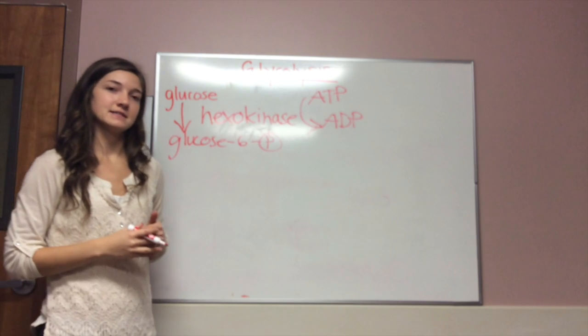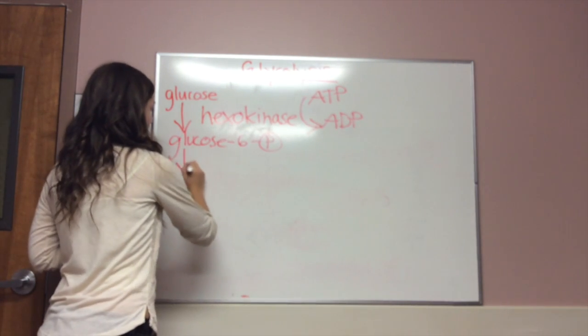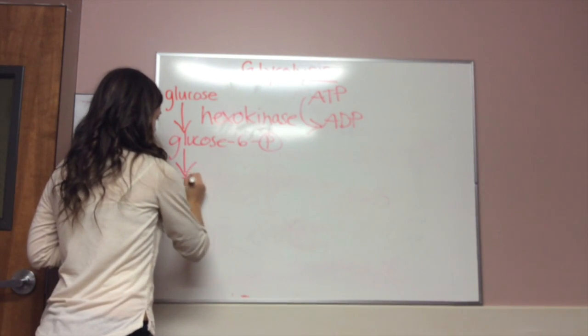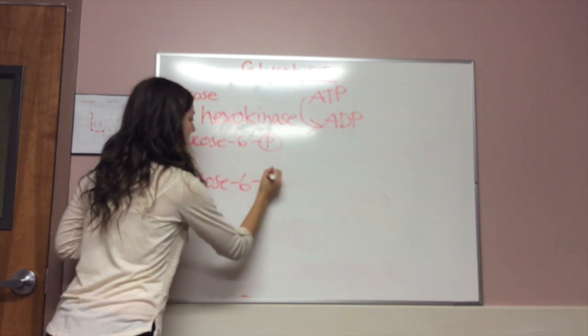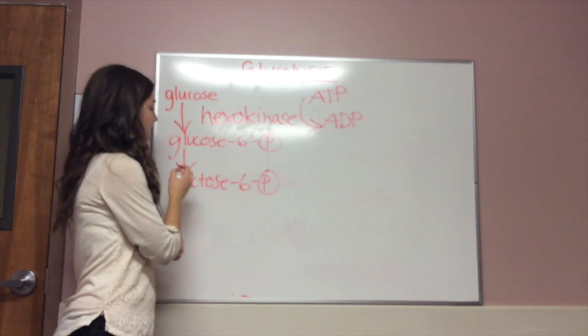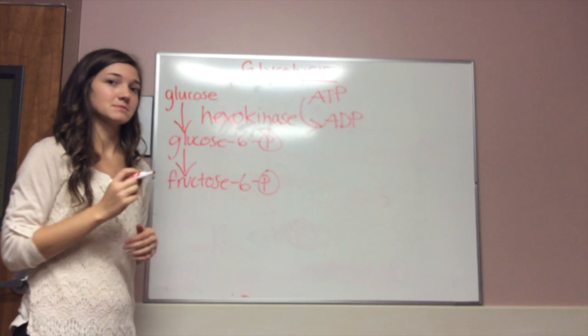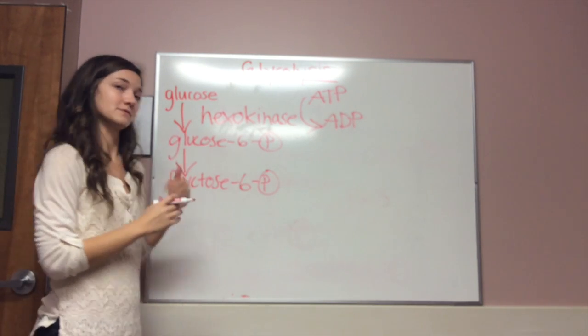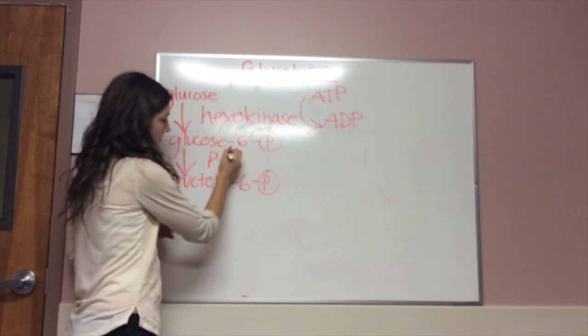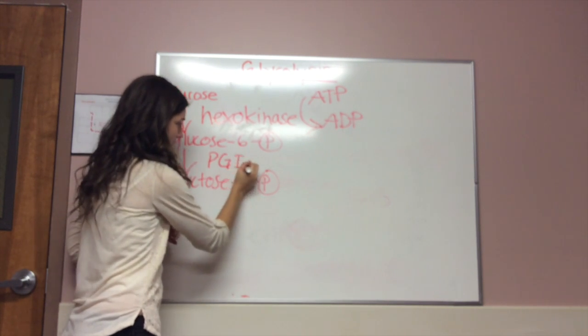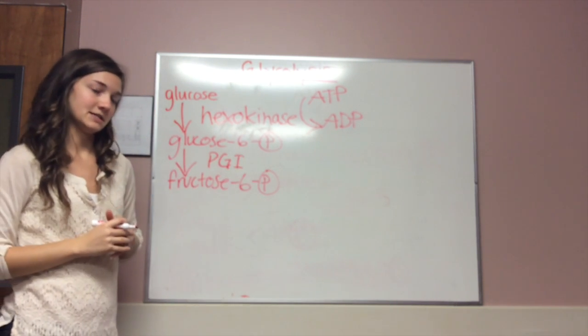Glucose 6-phosphate is then isomerized into fructose 6-phosphate. The first carbon of fructose is much more reactive than the first carbon of glucose. This reaction takes place with phosphoglucoisomerase, abbreviated PGI.